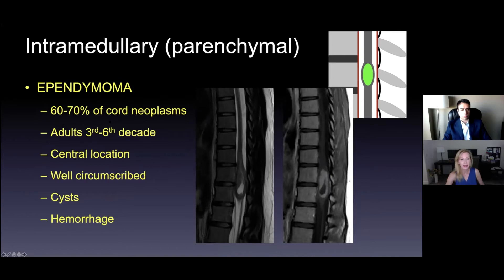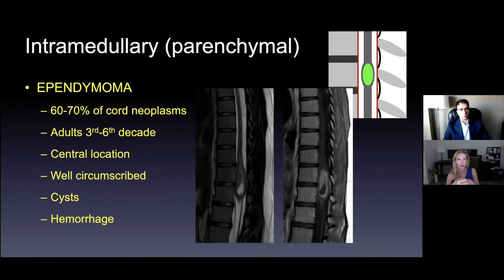Ependymomas come from the ependymal cells lining the central canal of the spinal cord — essentially a hole in the middle of the cord lined by ependymal cells, similar to the ventricles in the brain. So they will almost always have a connection to the center of the cord — not eccentric or peripheral. They're not totally well circumscribed, but better than astrocytomas. Most have cysts and they can often hemorrhage, seen as black signal on spine MRI.